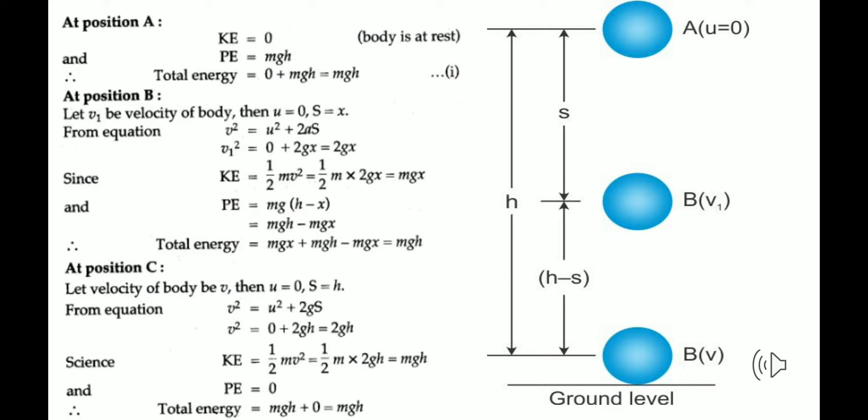Now we are about to calculate the total energy of the system. A ball is falling from a height — let the mass of the ball be m and it is falling under gravity from a height h above the ground, from position A as shown in the figure. We will calculate the sum of kinetic energy and potential energy at three points: A is at height h, B is somewhere in between, and C is on the ground.